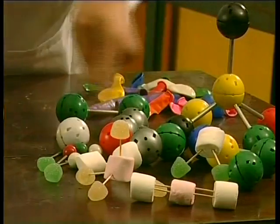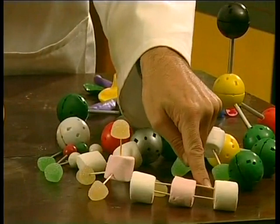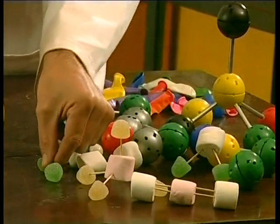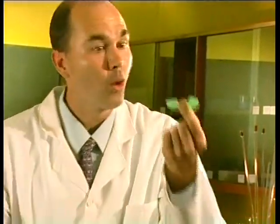We can also use marshmallows and different colored sweets to represent atoms. Toothpicks show the covalent bonds between them. This is a hydrogen molecule. Two atoms and a single covalent bond. Quite a yummy molecule, wouldn't you say?